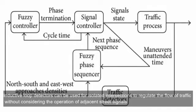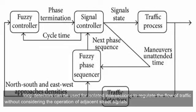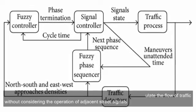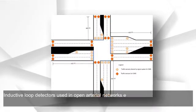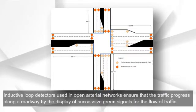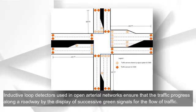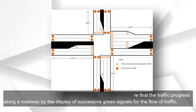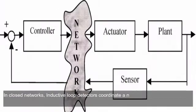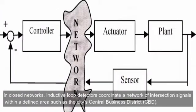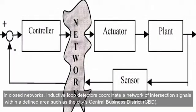The second application is arterial intersection control — inductive loop detectors used in open arterial networks ensure that traffic progresses along a roadway by the display of successive green signals for the flow of traffic. The third is closed network control — in enclosed networks, inductive loop detectors coordinate a network of intersection signals within a defined area, such as the city's central business district (CBD).